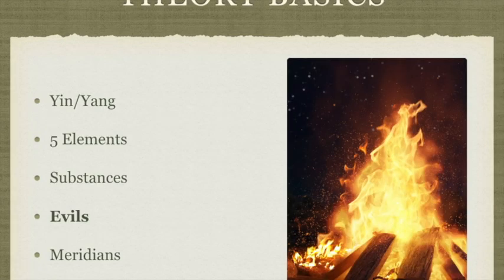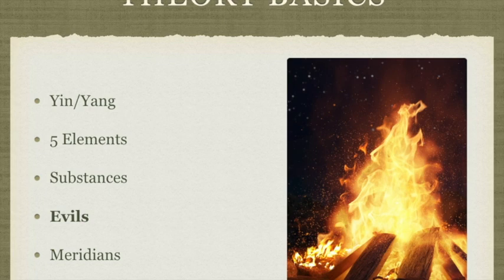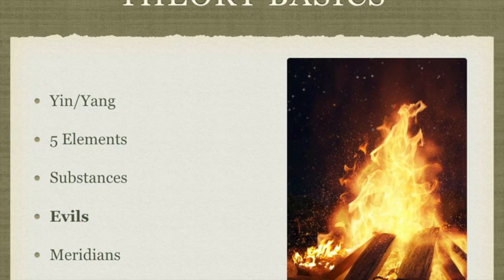Tonight we're covering the basics. We've covered the concepts in previous lectures of the yin and the yang, the five element correspondences and cycles, and the basic substances of the body including qi, which we're going to touch on again a little bit tonight. Today we're going to talk about the evils or the pathogenic factors according to Chinese medicine. There are some interesting similarities and some differences about how TCM looks at illness, and the lines of what is you and what is not you are drawn a little bit differently in TCM than in Western medicine.